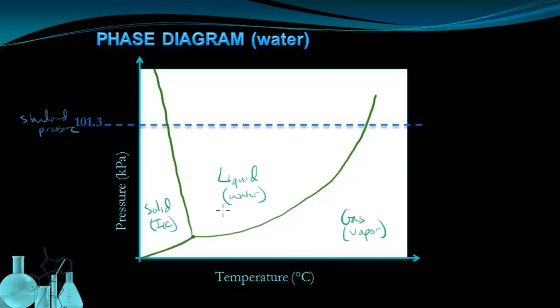So that's generally how this diagram works. Now the lines mean something special. The lines represent the set of conditions where a phase change starts to happen. So let's look at a point on one of these lines, for example.